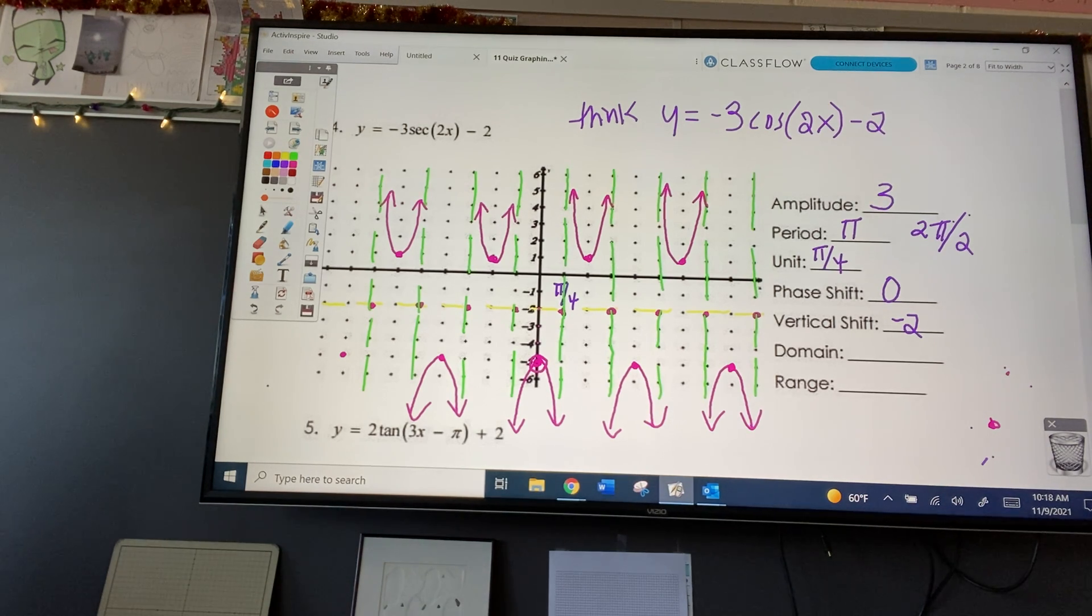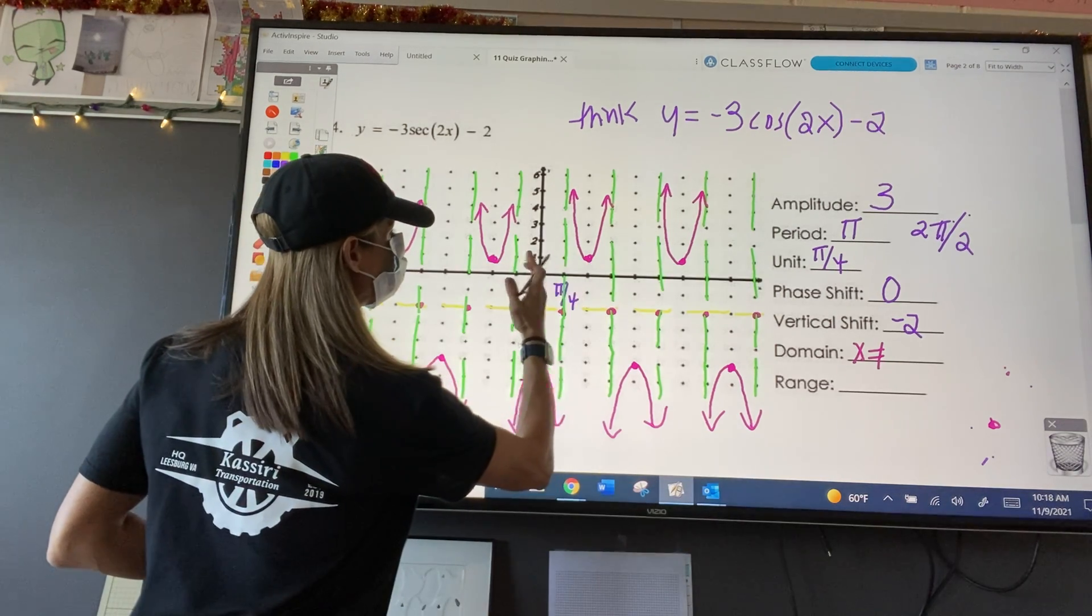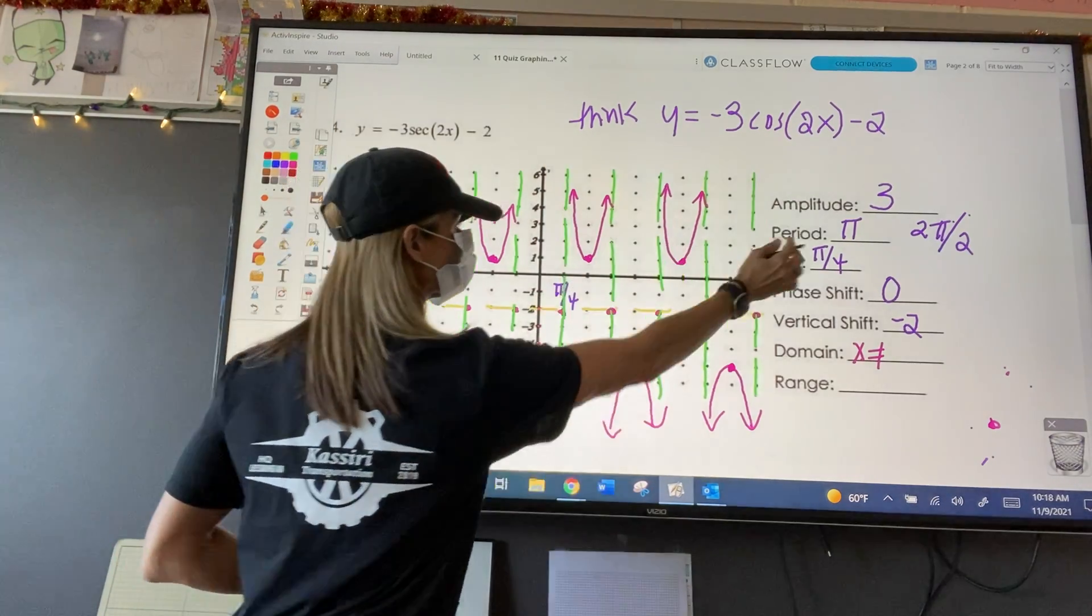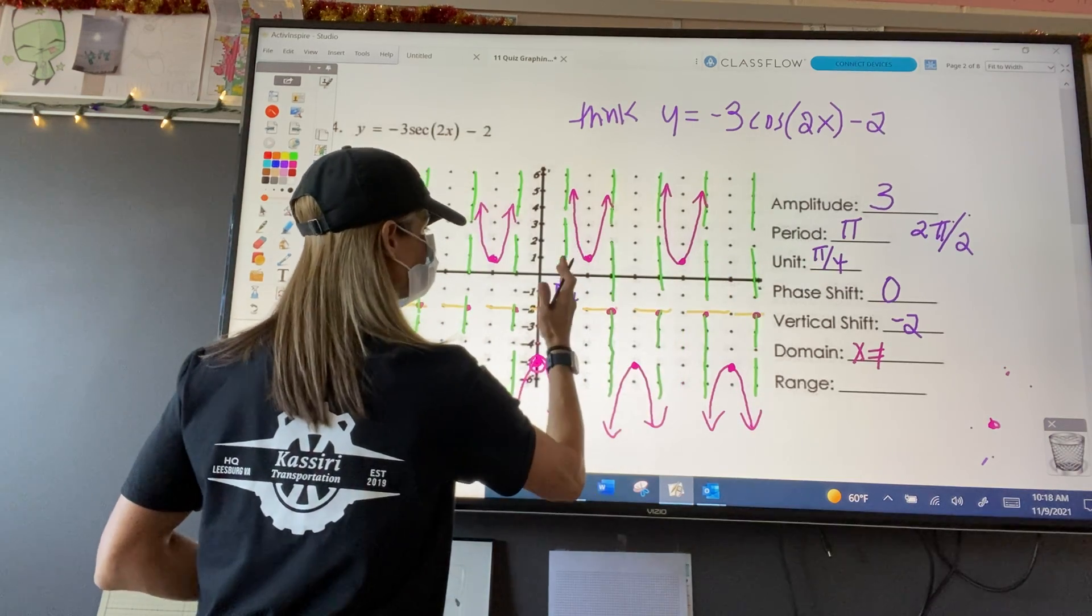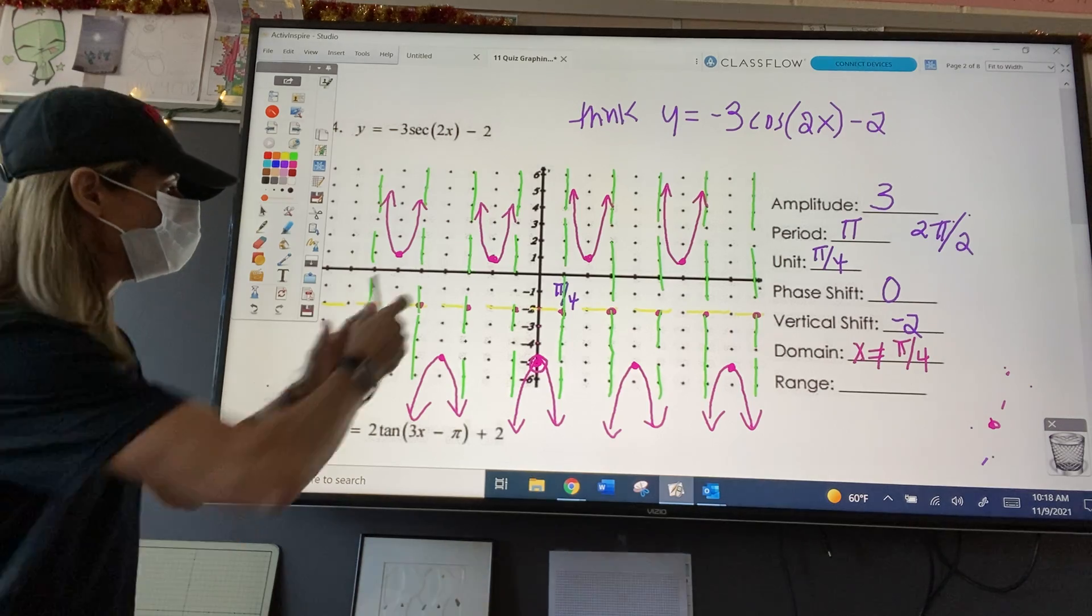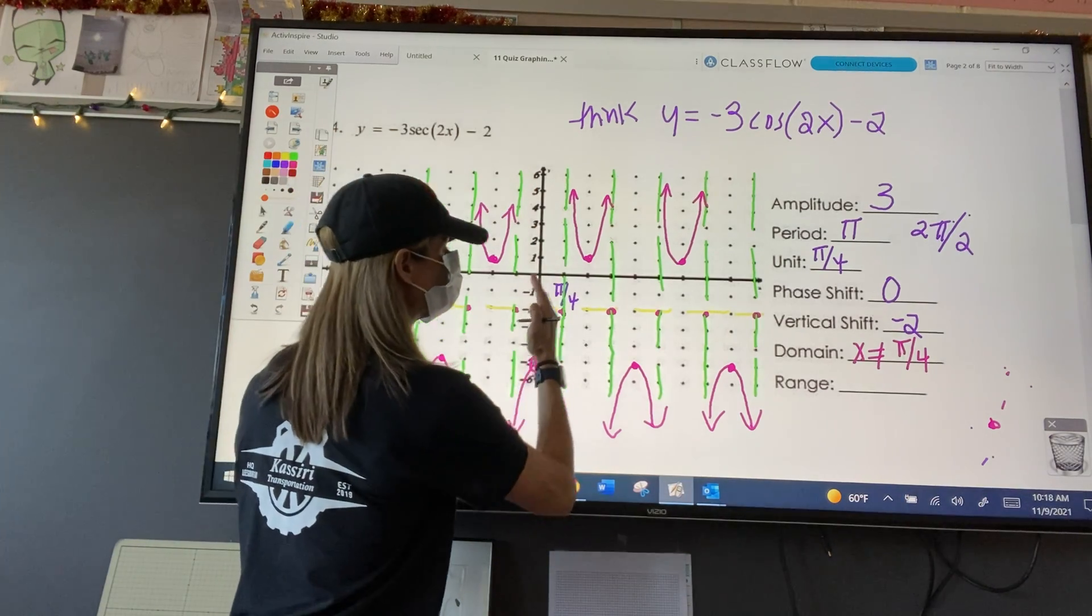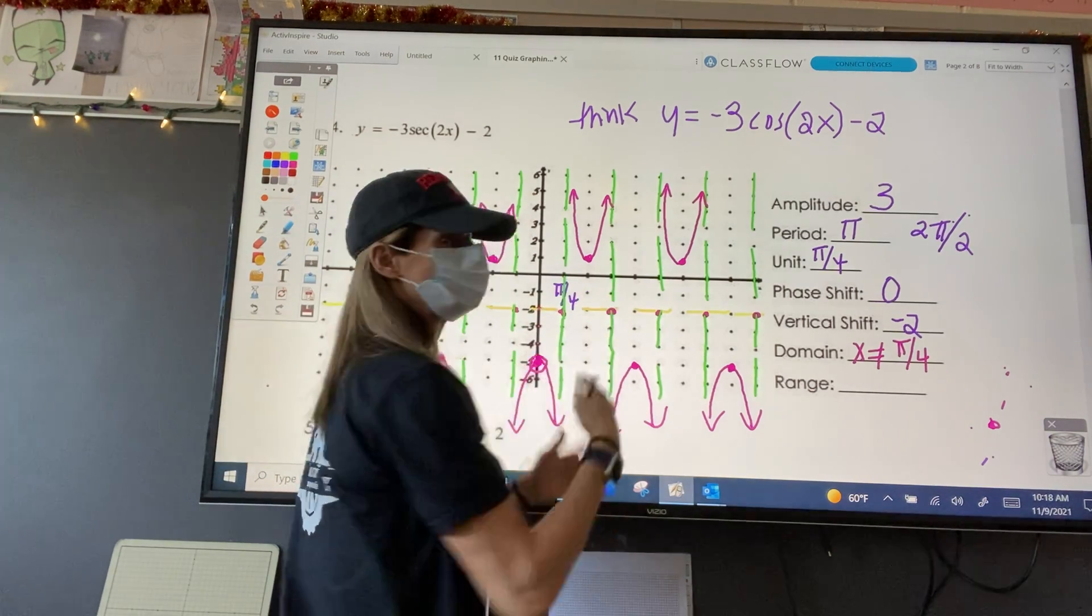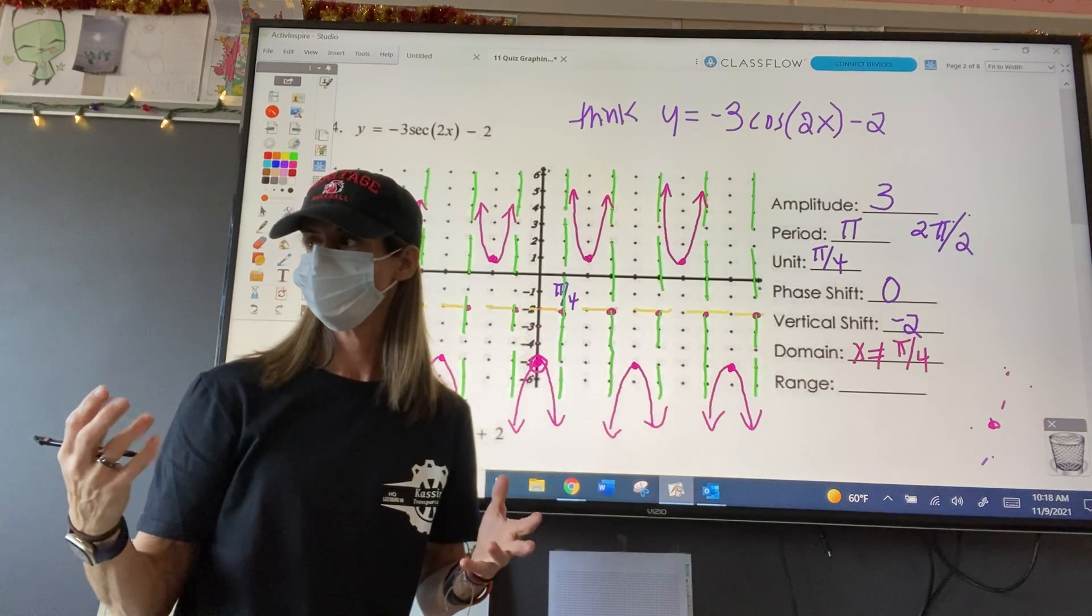Domain. What's the domain? What's the first asymptote? I just can't beat pi over two. So, x cannot be, right, I'm looking, we're counting by, our first one to the right of the y-axis is right here, and that is the unit, which is pi over four. So, it can't be pi over four. Start with that.